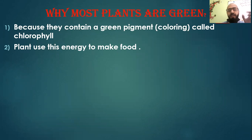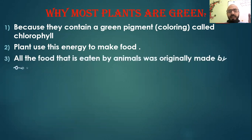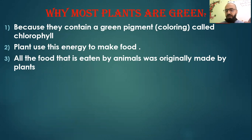The plant uses energy from photosynthesis to make food. The photosynthesis process gives us sugar and oxygen — these are the results of photosynthesis. So plants use energy to make their food and to grow. All the food eaten by animals was originally made by plants, so the plant is the main source of food. Plants get their food from the soil with the help of the sun and the photosynthesis process.